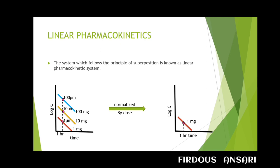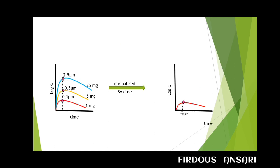With every one percent increase in dose, the various pharmacokinetic parameters also increase by one percent — this is linear pharmacokinetics. The example given is for intravenous bolus, but a similar thing can be observed when the drug is taken via the oral route. With every one percent rise in dose, there will be a one percent increase in absorption or other pharmacokinetic parameters, and all these lines superimpose over one another.